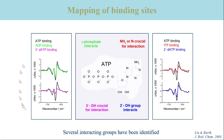All of them induced conformational changes that were different from those of ATP. They are compared here in these panels, where in black we always see the conformational changes induced by ATP, and in color we see the conformational changes by the ATP derivatives. In all cases, the conformational change induced by the ATP derivatives was smaller than with ATP, particularly drastic upon omission of the 3-prime hydroxyl group. Thus, all of the modified groups seem to be important for binding, although to different degrees.